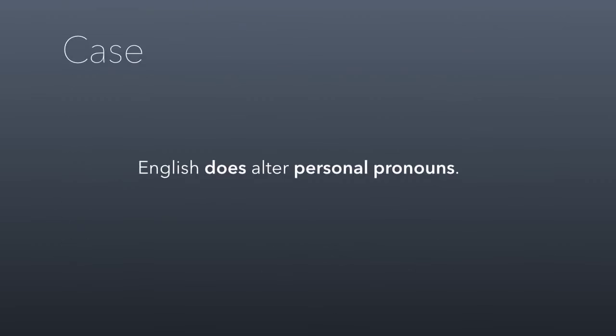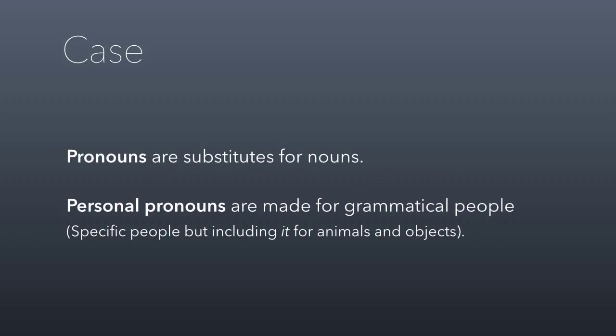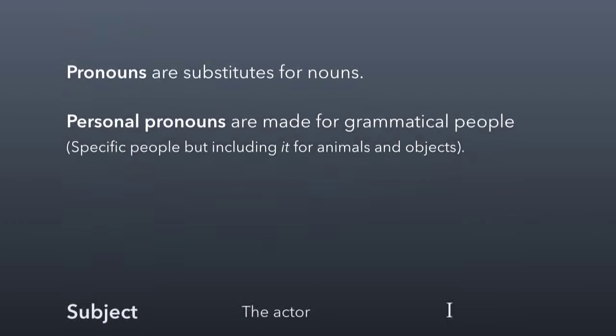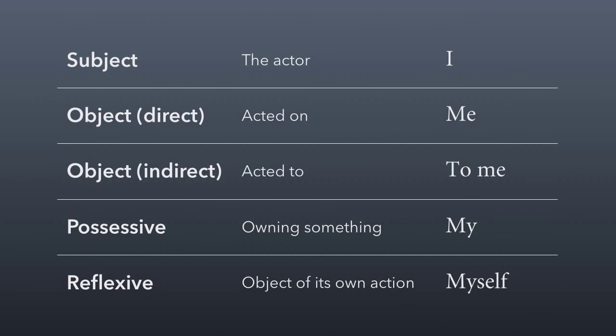The exception is that English does alter personal pronouns. Pronouns are substitutes for nouns. A personal pronoun is a pronoun for grammatical people — specific people in the sentence, including 'it' for animals and objects. So going back to the list of five cases, for first person singular: the subject is 'I', the direct object is 'me', the indirect object is 'to me', the possessive is 'my', and the reflexive is 'myself'.